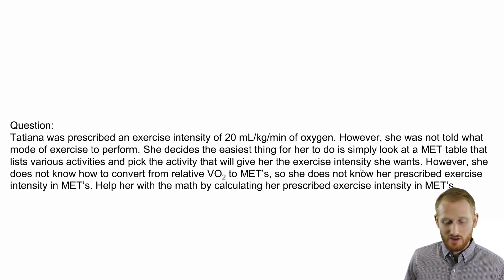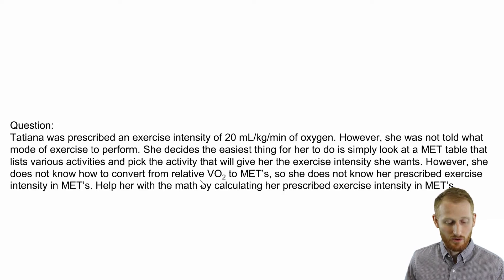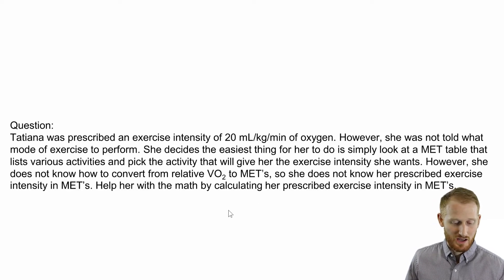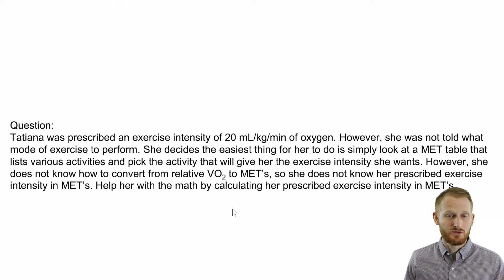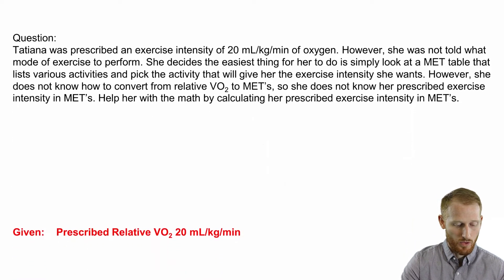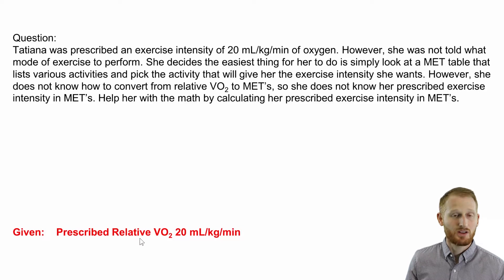The issue is she does not know how to convert from relative VO2 to METs, so she does not know how to calculate the METs she needs. Help her by calculating from relative VO2 to METs so she can look up an activity in a MET table. The given information is that she's prescribed a relative VO2 of 20 milliliters of oxygen per kilogram of body mass per minute.